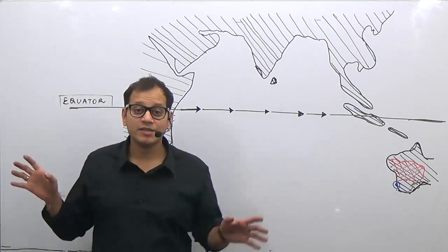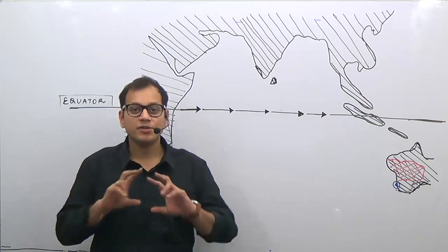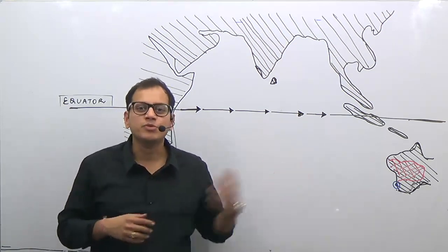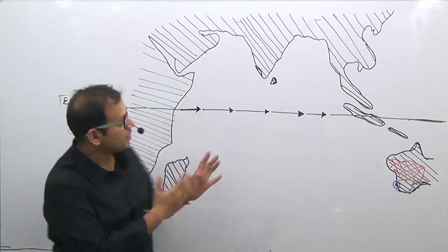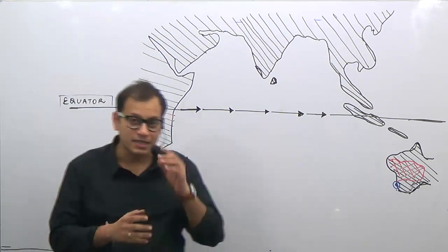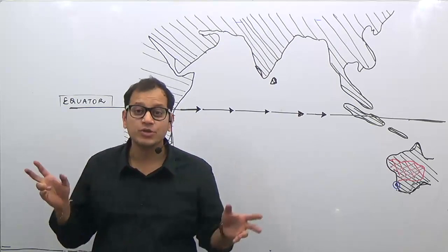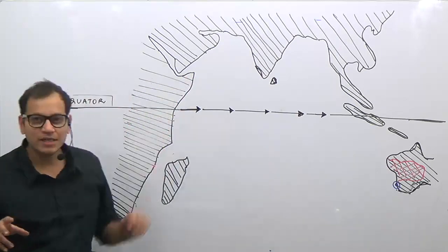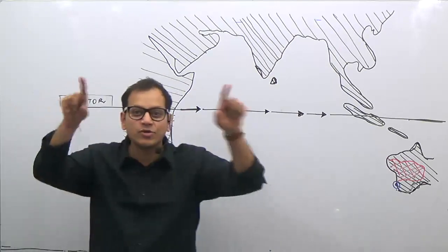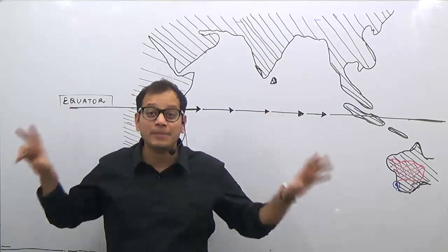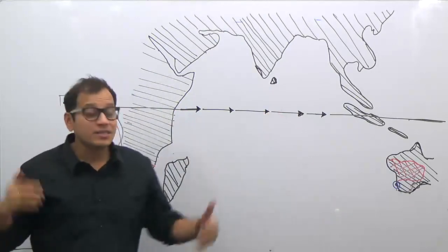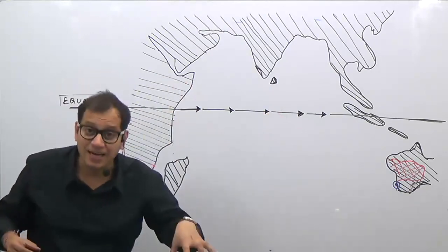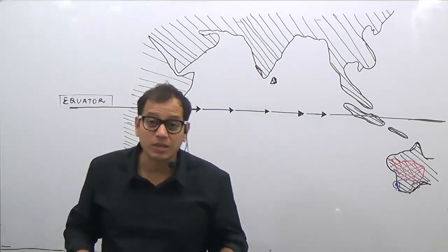We have already studied the currents of the Atlantic and Pacific Oceans — they were more or less the same, only the names were different. Now look at the Indian Ocean. From the diagram itself we can say that the Indian Ocean is a half ocean. The northern part of the Indian Ocean is enclosed and surrounded by landmass, and because of this, monsoon winds and the landmass have a major effect on the currents generated in the Indian Ocean system.